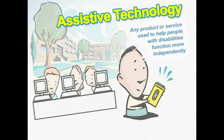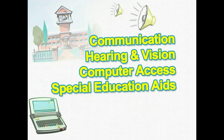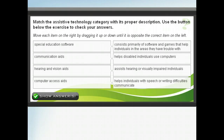Whether you have a physically or otherwise impaired student in your class, chances are there are technologies that can help make learning easier for him or her. Because such a wide assortment of assistive technologies exists, they're often grouped and referred to by categories. For our purposes, the four categories we'll use are as follows: communication, hearing and vision, computer access, and special education aids.